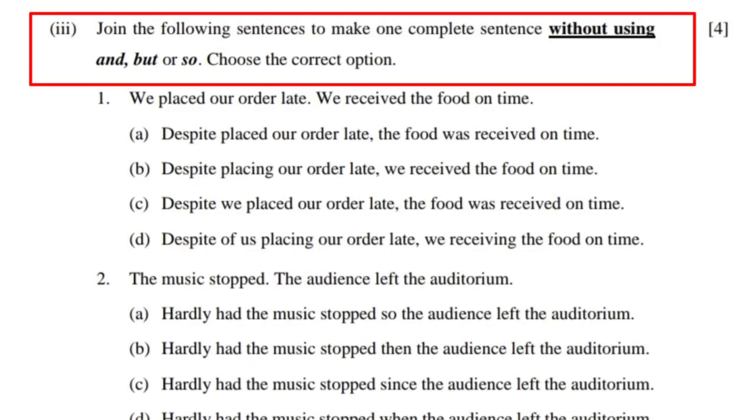The third sub-question is MCQ type with four options, and it has conjunction questions. You have to join sentences without using 'and', 'but', or 'so'. The options are already given, and you must read all four options carefully before choosing your answer.